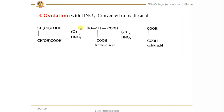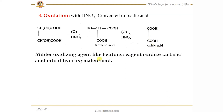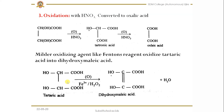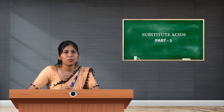Third reaction is oxidation. In the presence of HNO3 (a strong oxidizing agent), tartaric acid first forms an intermediate and further oxidizes to give oxalic acid. If you treat with a milder oxidizing agent like Fenton's reagent in the presence of hydrogen peroxide, tartaric acid is oxidized to give dihydroxymalic acid, which contains a double bond. This is about the reactions of tartaric acid.